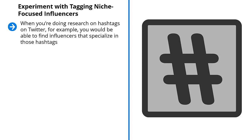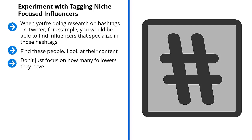Experiment with tagging niche-focused influencers. When you're doing research on hashtags on Twitter, for example, you'll be able to find influencers that specialize in those hashtags. These people love to post content related to certain topics and use a narrow range of hashtags every time they post. Find these people, look at their content — are people retweeting them a lot? Are they getting a lot of engagement? It should be fairly easy to see which accounts are influential in your niche.